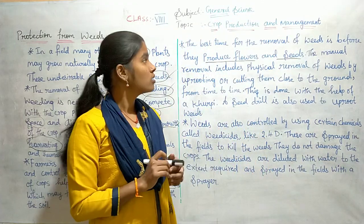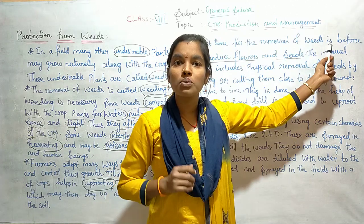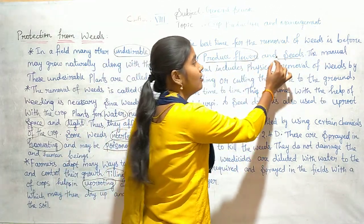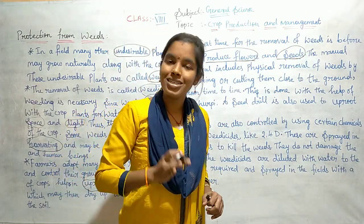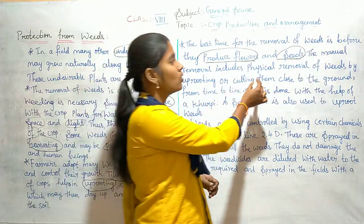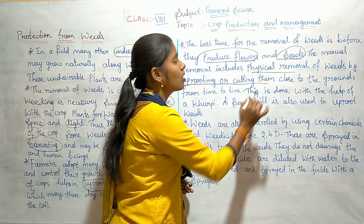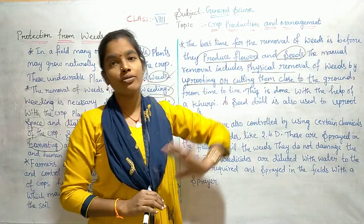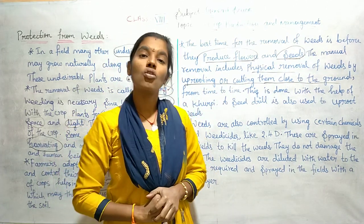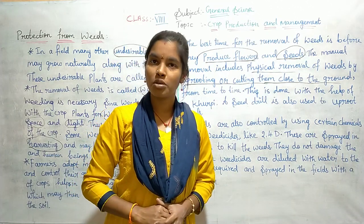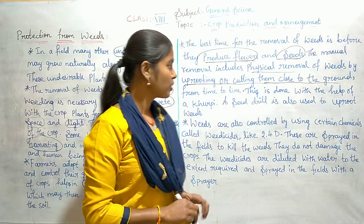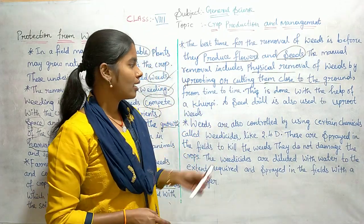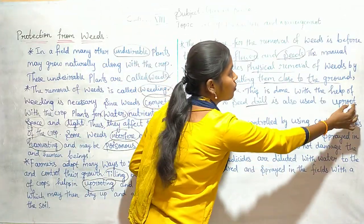The best time for removal of weeds is before they produce flowers and seeds. Manual removal includes physical removal of weeds by uprooting or cutting them close to the ground. This is done with the help of a khurpi. A seed drill is also used nowadays to uproot weeds from the ground.